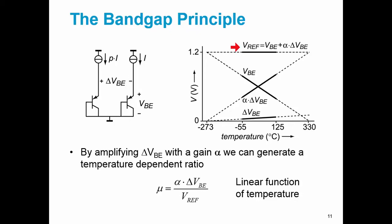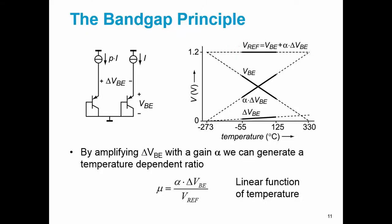But what we want is we want a digital number. So we can create a ratio of alpha delta VBE with Vref to form a ratio mu, which will be a linear function of temperature.